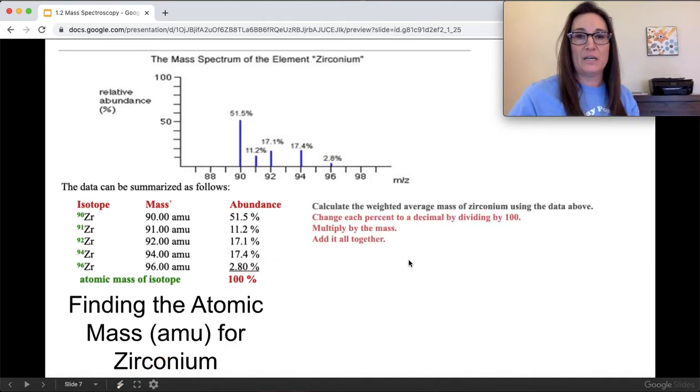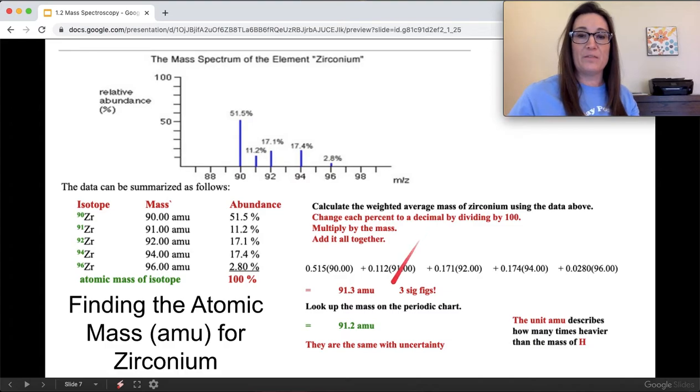So to calculate the atomic mass for this, you have to take and calculate the weighted average by taking this mass multiplied by the decimal of the isotope, so 0.515, and then you just add that all together. So it looks like this, and then this value is what should be on the periodic table, and that's saying it's 91.2 times heavier than hydrogen. So that's how you'd calculate it.